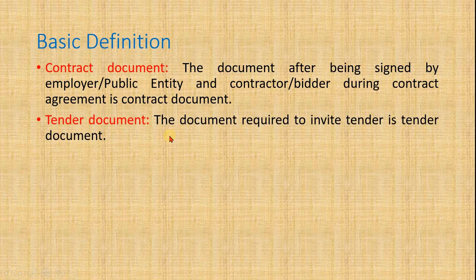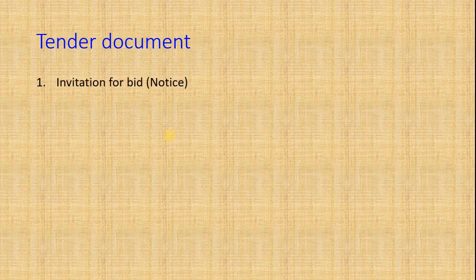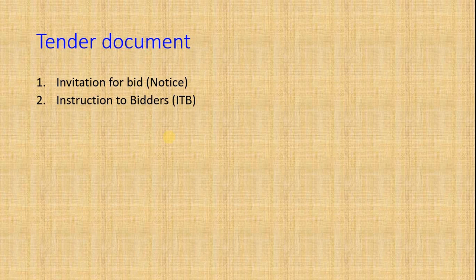Now let's see what the tender documents are in priority order. The first is the Invitation for Bid — that is the tender notice. The tender notice contains information like when the tender will open, what the amount of the tender is, what conditions apply, who is eligible to apply, how much bid bond or bid security is required, and other related information given in summary.